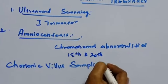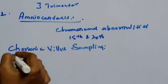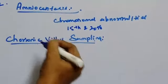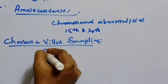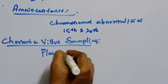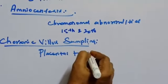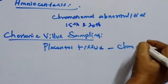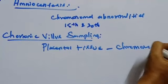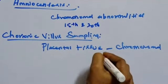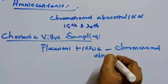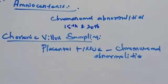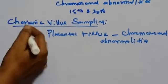The third method is chorionic villus sampling. This is a prenatal test that involves taking a sample of placental tissue, also used to detect chromosomal abnormalities, similar to amniocentesis. The next method uses a fetoscope.